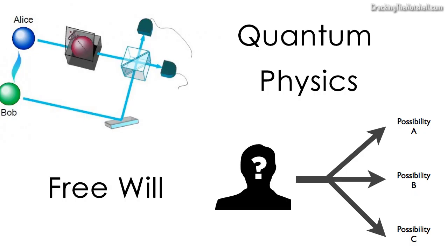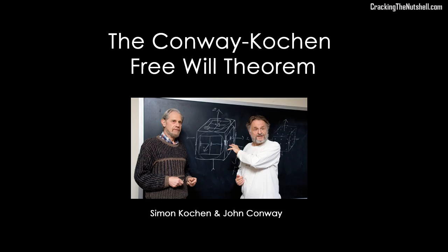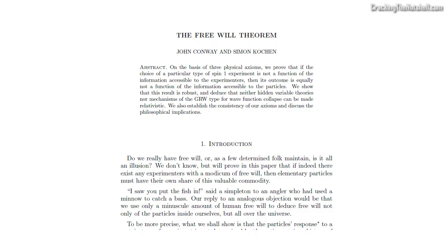In this second video on quantum physics and free will, I'd like to look at another fascinating theorem that digs deep into the foundations of quantum theory. It is called the Conway-Kochen free will theorem. The Conway-Kochen free will theorem was proved by John Conway and Simon Kochen in 2007, and it provides us with another robust result which, like Bell's theorem, highlights some of the important philosophical issues that lie at the core of quantum mechanics.